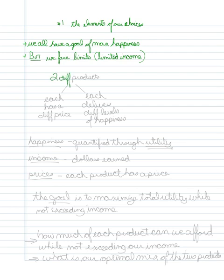If we have two different products, they can be related or not, that doesn't matter. It's just that we have two different products. Each has a different price. Each delivers different levels of happiness.